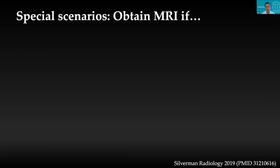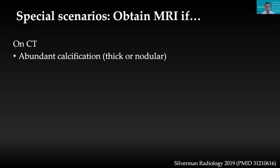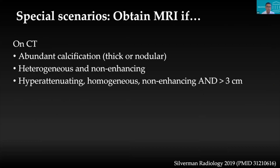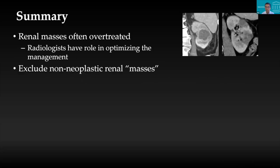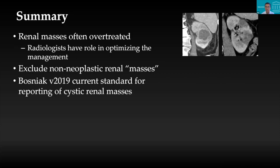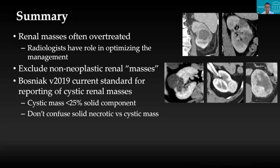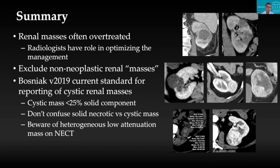Some special scenarios: if on CT you see abundant calcification, heterogeneous non-enhancing lesions, or a hyperdense cyst larger than 3 cm, get an MRI, because CT may be missing something. In summary: renal masses are often overtreated. Radiologists have a role in optimising management. It is important to exclude non-neoplastic causes of renal mass. Bosniak 2019 is the current version to use.